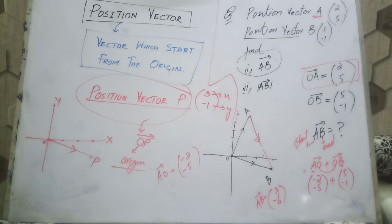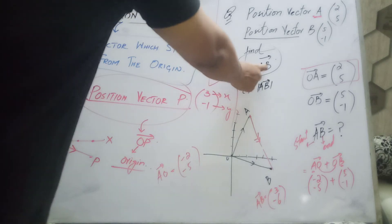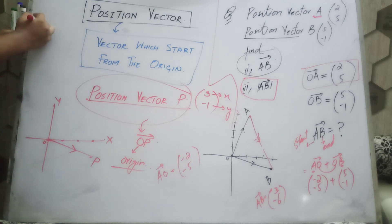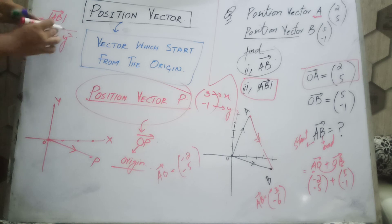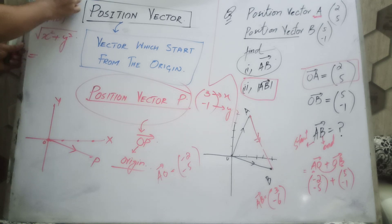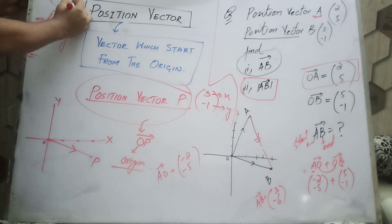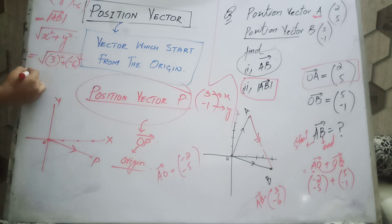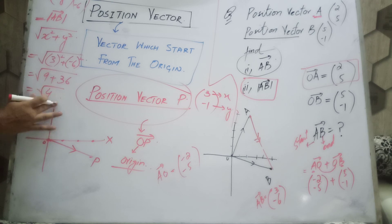Is there any confusion? Vector AB is clear to you. Now, after AB, we have to find the magnitude of vector AB. The formula for the magnitude of a vector is the square root of x squared plus y squared. For vector AB equal to (3, -6), the upper value x is 3 and the lower value y is -6. So x is replaced by 3 and y is replaced by -6: 3 squared is 9, 6 squared is 36, and the answer is the square root of 45.